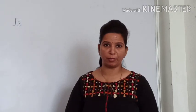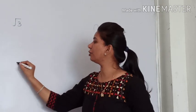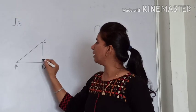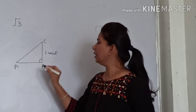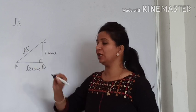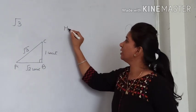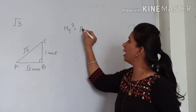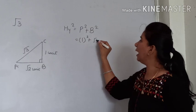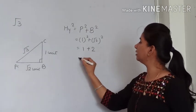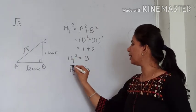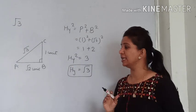Now, just as we represented root 2 on the number line, we can represent root 3 the same way. For this we again take a right angle triangle. If we take base as root 2 units and perpendicular as 1 unit, then hypotenuse squared equals perpendicular squared plus base squared — that is 1 squared plus root 2 squared — equals 1 plus 2 equals 3, so hypotenuse equals root 3.